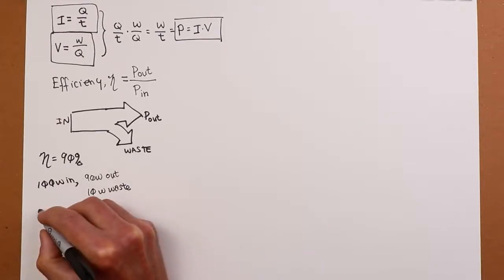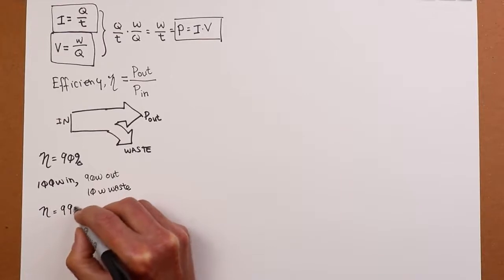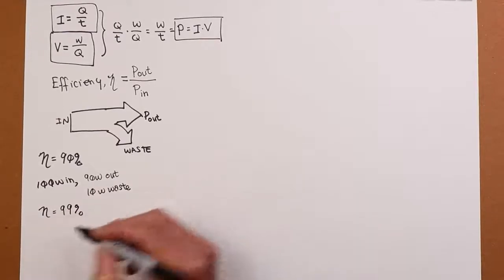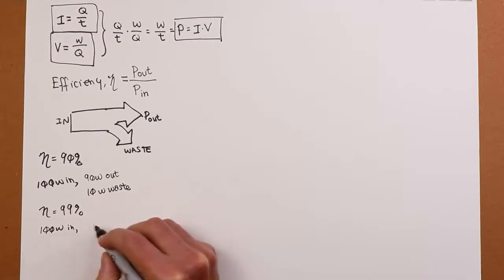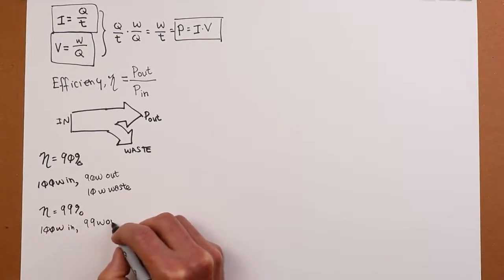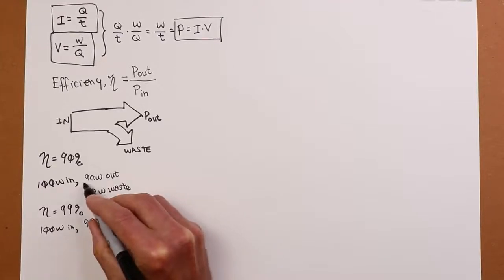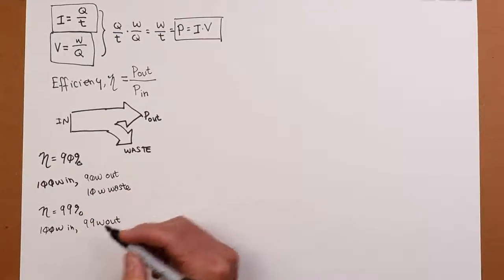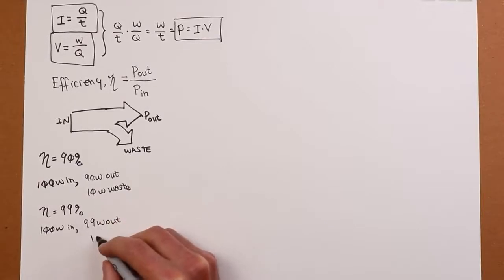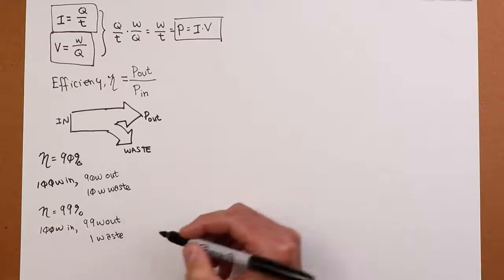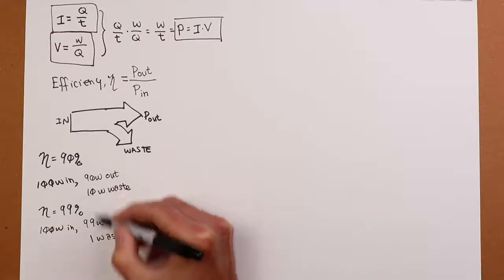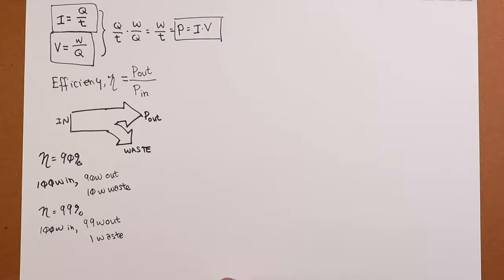Now, on the other hand, if we had an efficiency of, let's say, 99%, you wouldn't think that's a great improvement. I should say 100 watts in, you would get 99 watts out. And you'd say, well, 90 to 99, that's only a 10% improvement. But if you look at the waste, it's only one watt waste. So as far as the cooling load that would be required for the transistor, that's a factor of 10. 10 watts waste versus one watt waste. So yeah, definitely go with the 99%. That's much better.